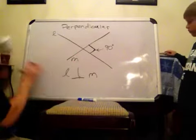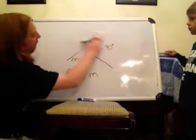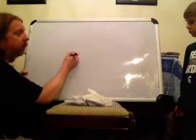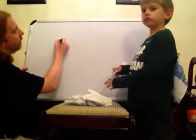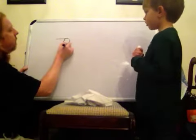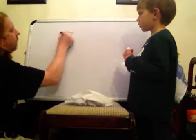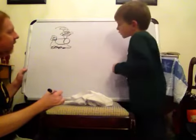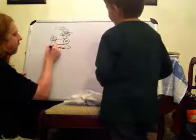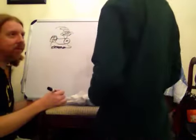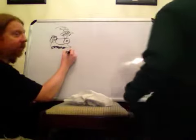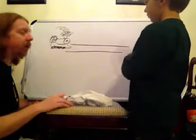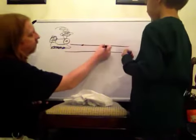Now do you know what they call it when we have two lines that never cross? Can you picture two things that don't ever cross? What would that look like? You know the train? It runs on train tracks, right? Train tracks go like that — they're parallel.